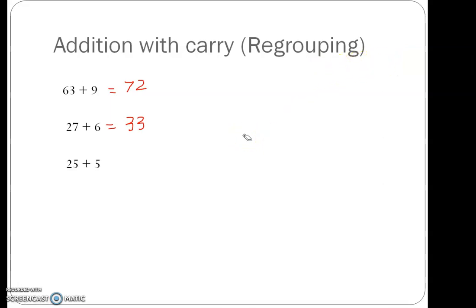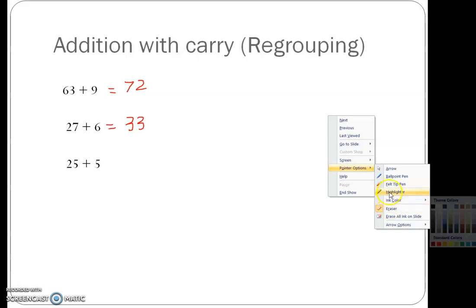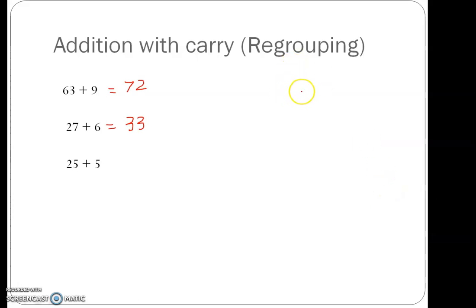Let us look at another example, 25 plus 5. So let us arrange them in the place value chart. 10s and 1s. 25 is 2 tens and 5 ones. 5 is 5 ones. If you add them, start with ones place. 5 plus 5 is 10. Ones place is 0, 1 is carry forward. 2 plus 1 is 3. So 25 plus 5 is 30.